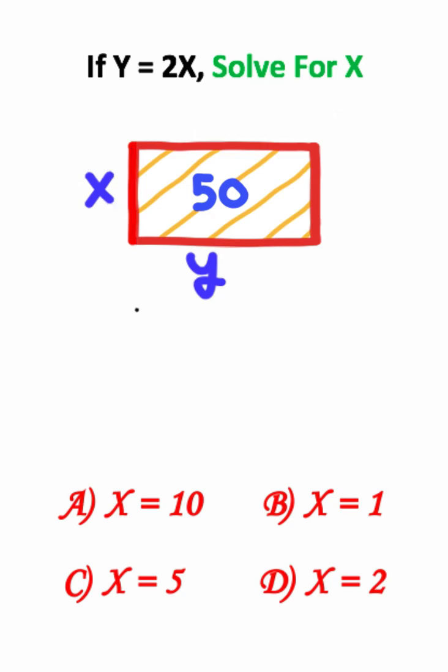We can recognize that the area of a rectangle is width times length, and multiplying these two should give us 50. Notice that we are also given that the length of this rectangle is 2 times the width.